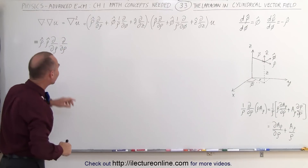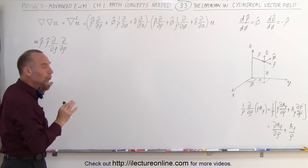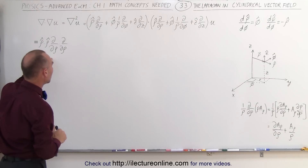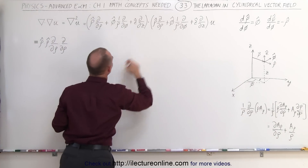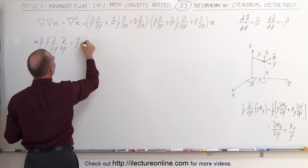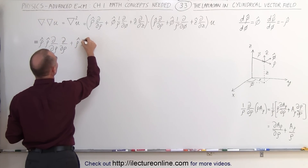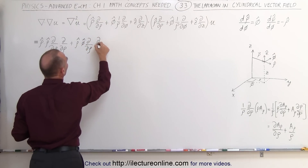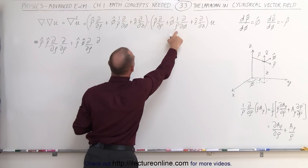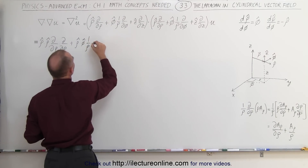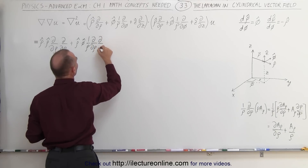You may ask why not write that as a second derivative — we don't do that here because we'll change the format later, as you'll see in a moment. Next, multiplying this times the next term, we get plus the ρ unit vector dotted with the φ unit vector, times the partial with respect to ρ, times one over ρ, times the partial with respect to φ.